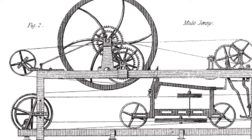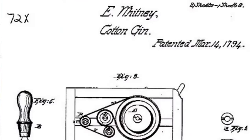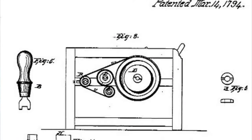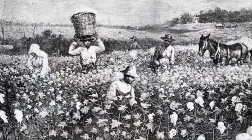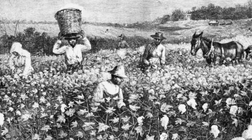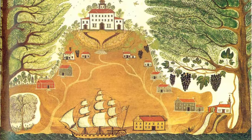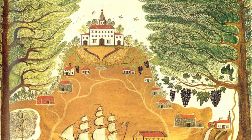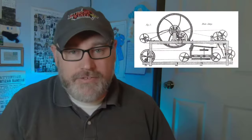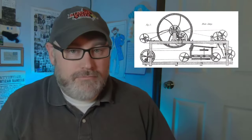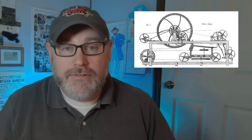The increase in production of thread required more cotton, which the invention of the cotton gin aided. The increase in demand for cotton caused the cotton market to grow rapidly, and unfortunately with it, the growth of the institution of slavery, as plantations across the American South became one of the primary suppliers of cotton to the world. The British attempted to create a monopoly on thread production by making it illegal for anyone to share the designs and plans for these early factories outside of Britain.